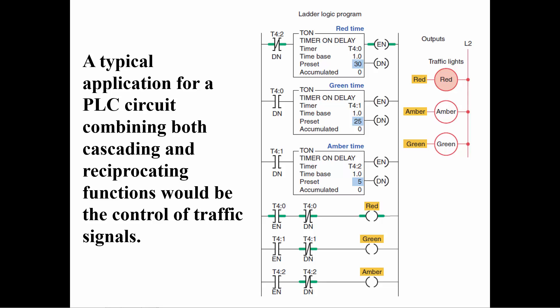After 30 seconds, when timer T4:0 is done, its done bit will cause the next timer T4:1 to start timing. T4:1 will time for 25 seconds and its done bit will start timer T4:2. After 5 seconds, when T4:2 is done, its done bit will become a 1 and the examine-if-open on the first rung will become false, which will cause T4:0 to become false and reset its accumulated value and set the done bit to zero.